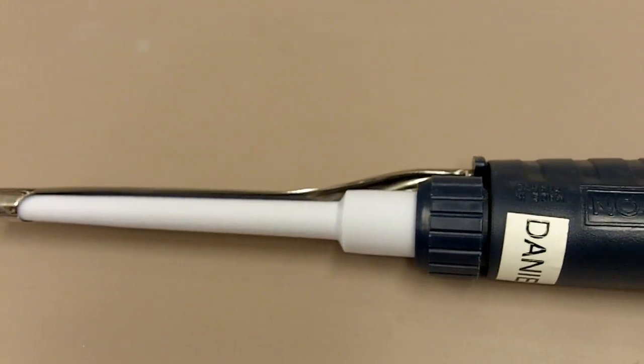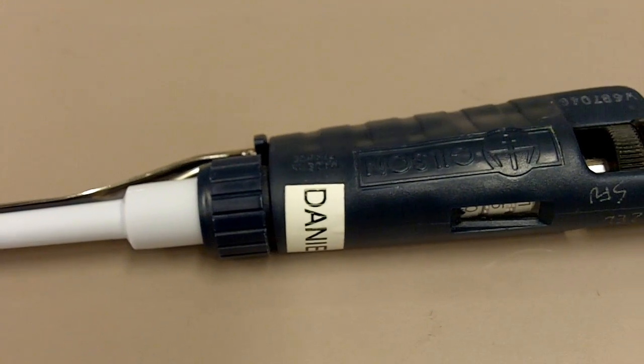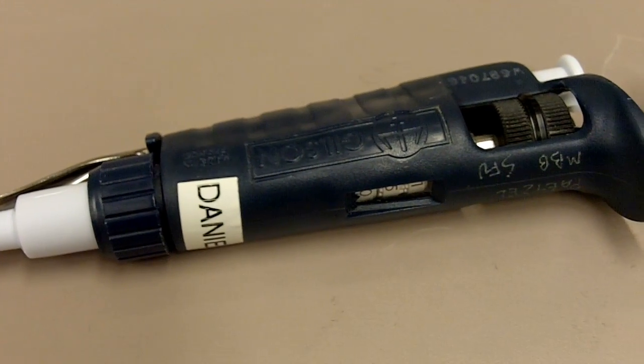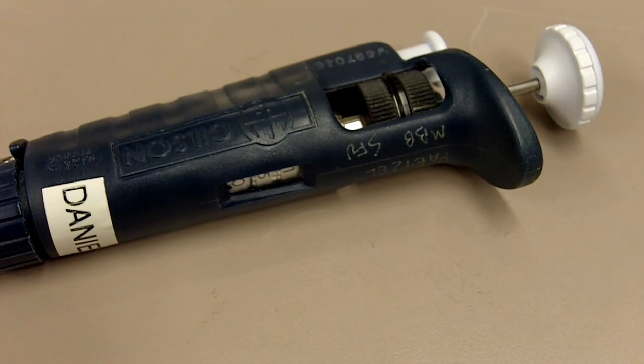So this is a pipette. It's also known as a micropipette because it's used to withdraw small volumes in a microliter range. I'm going to walk you through the basics of a pipette.